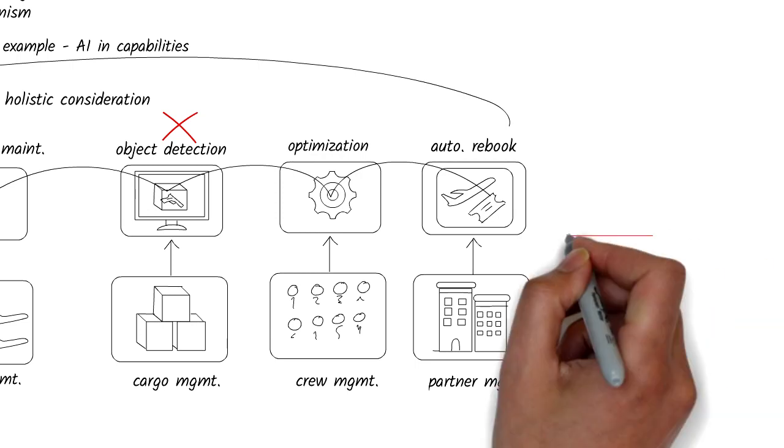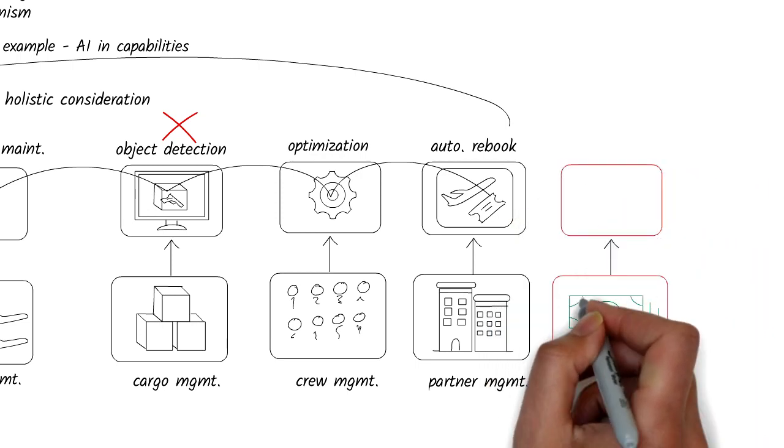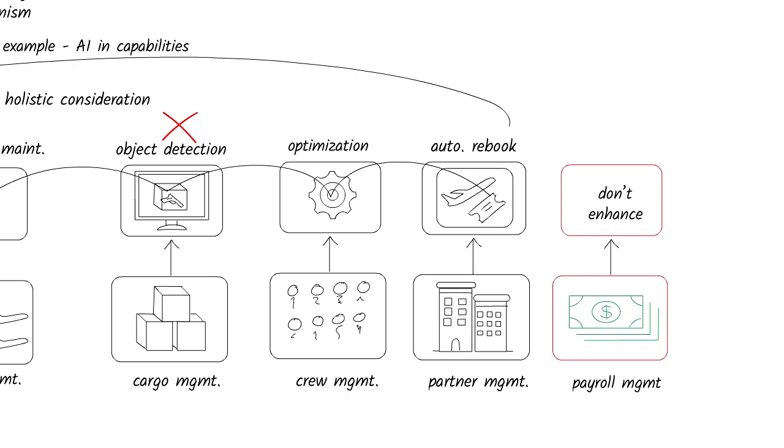For example, while payroll is important, it is a non-differentiating capability and can be outsourced. On the other hand, ticket purchasing experience, ticket change flexibility, free baggage check-in, these may be competitive differentiators. Leaders must invest more in these capabilities.